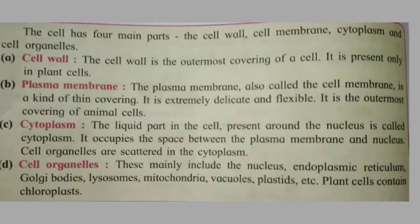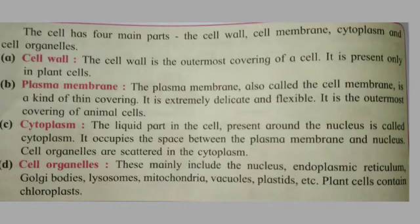The cell has four main parts: the cell wall, cell membrane, cytoplasm, and cell organelles. The cell wall is the outermost covering of a cell and is present only in plant cells. The plasma membrane, also called the cell membrane, is a thin, extremely delicate and flexible covering and is the outermost covering of animal cells. The liquid part of the cell present around the nucleus is called cytoplasm; it occupies the space between the plasma membrane and the nucleus, and cell organelles are scattered within it. Cell organelles mainly include the nucleus, endoplasmic reticulum, Golgi bodies, lysosomes, mitochondria, vacuoles, plastids, etc. Plant cells also contain chloroplasts.